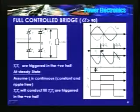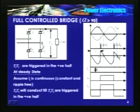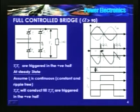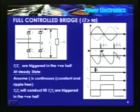Let us draw the waveforms for alpha greater than 90. Till you trigger T1 and T2, T3 and T4 are conducting. Output voltage is VBA, which is negative in the positive half — so there is a negative voltage at that point. At alpha, we trigger T1 and T2, and output voltage jumps to VAB. VAB continues and you will find that the average value of this waveform is negative. The area under the curve from 0 to alpha is much higher compared to that from alpha to pi — small area here, large area there — therefore average value is negative.